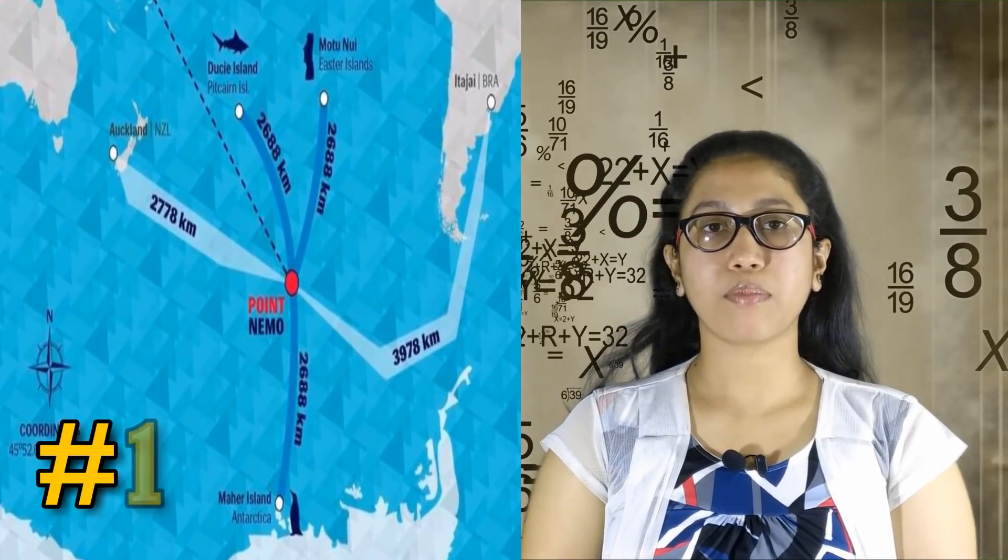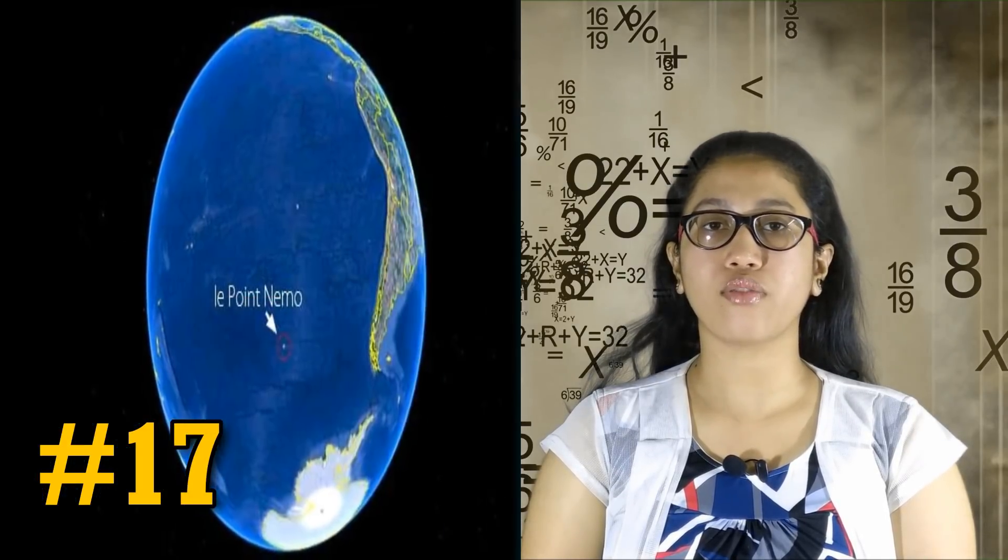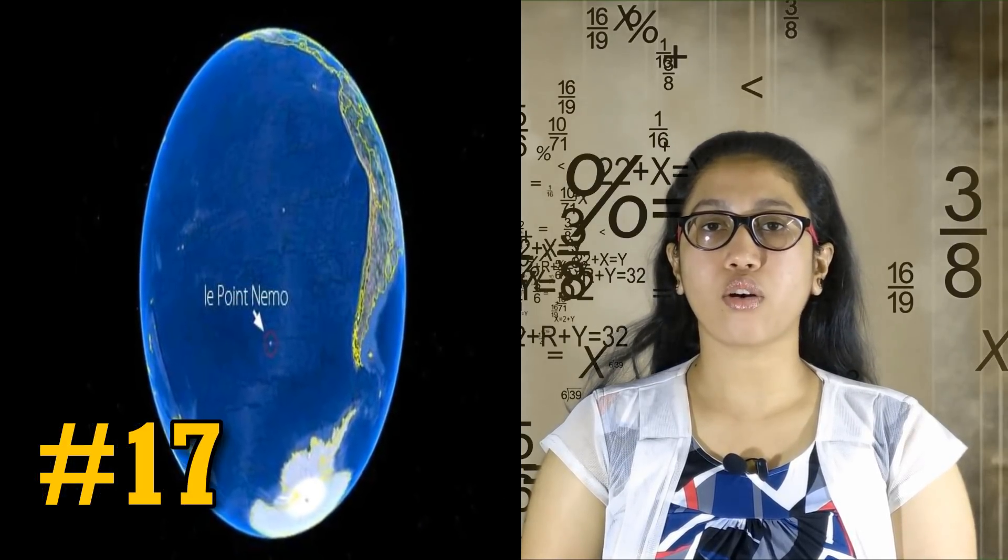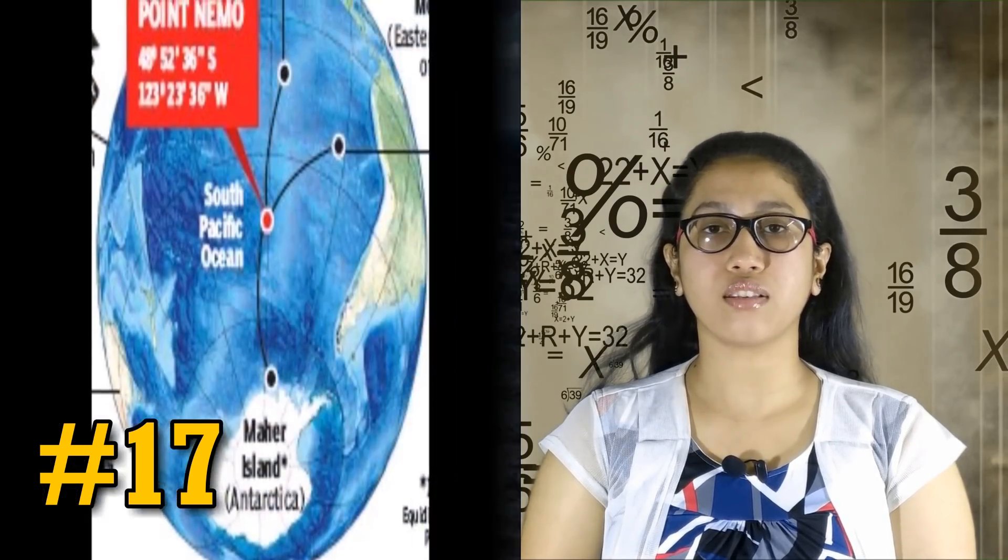There is a place in the Pacific Ocean called Point Nemo. It is so far from land the nearest humans are often astronauts. The ISS orbits the Earth at a maximum of 258 miles. Meanwhile, the nearest inhabited land to Point Nemo is over 1,670 miles away.